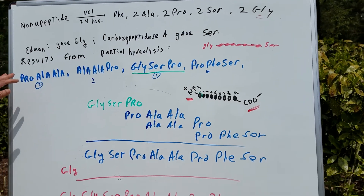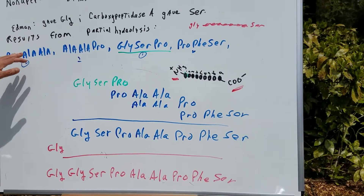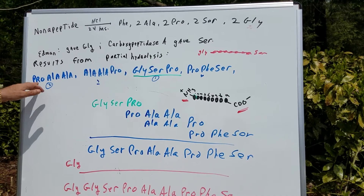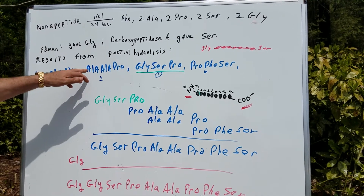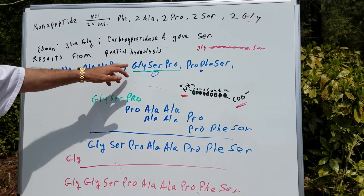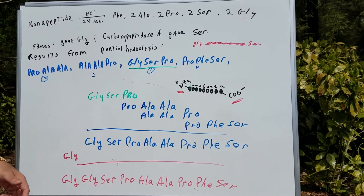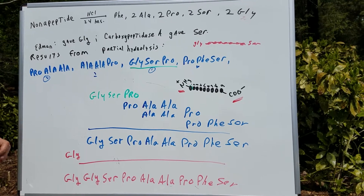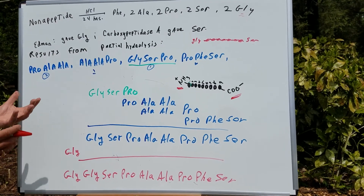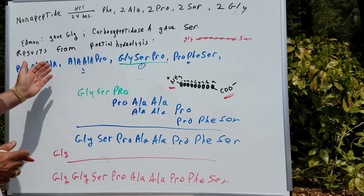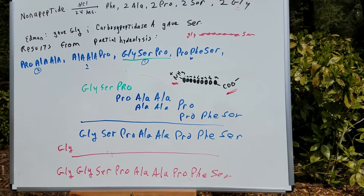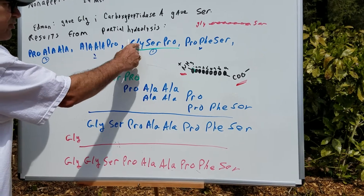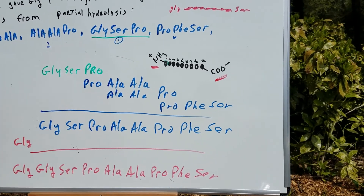Now what we're going to do is a partial hydrolysis of this nona peptide. Partial hydrolysis gave Pro-Ala-Ala, Ala-Ala-Pro, Gly-Ser-Pro, and Pro-Phe-Ser. The best way to do it — what I like — is to take the longest fragment or the one in greatest amount. Well, they're all tripeptides, so it doesn't matter where you start. I'll start with Gly-Ser-Pro, so I wrote down Gly, Ser, Pro.